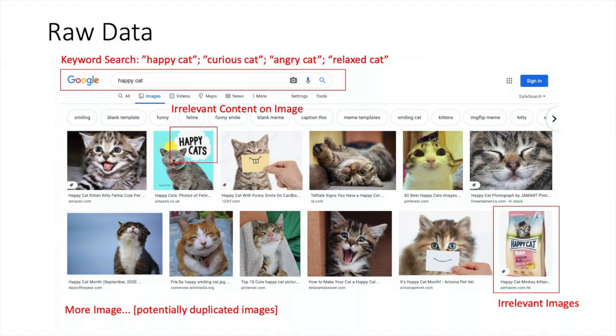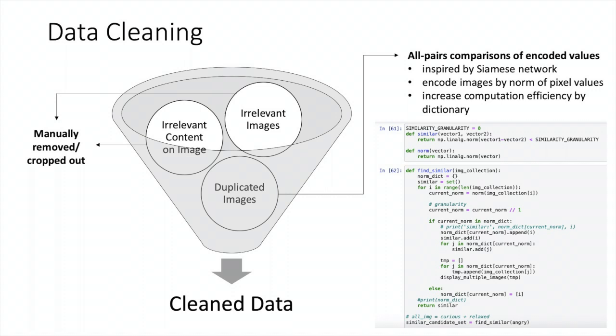Our raw data comes from Google Image. We use the keywords happy cat, curious cat, angry cat, and relaxed cat to directly extract data from the web. So we get labeled images of four classes. Looking into these data, there are several potential issues. First, there may be irrelevant content on the images. Then we may encounter completely irrelevant images. We'll also find duplicated images as we scroll down.